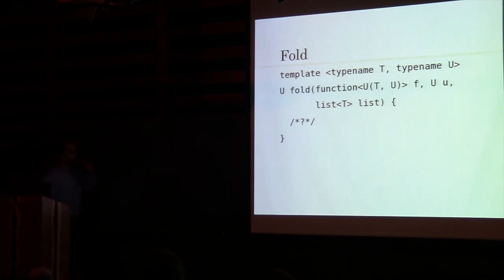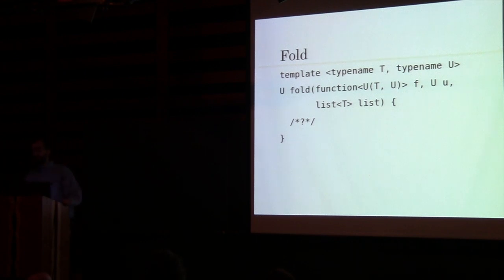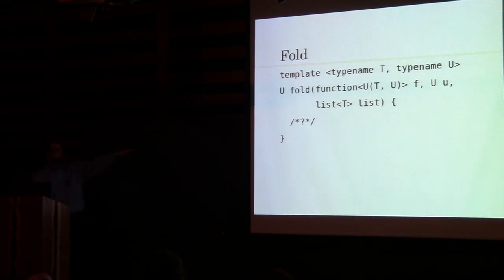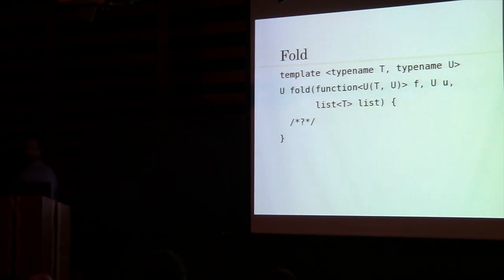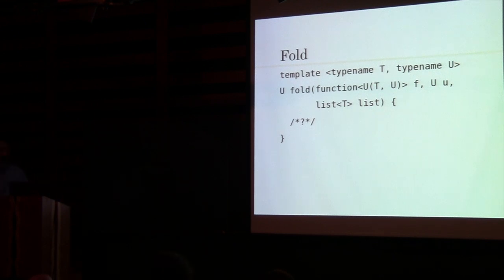Let's look at this higher-order function called fold. Based on this signature, we're going to try to come up with an interesting implementation. We see that we need to return a U. What we have available is a function which takes in a T and a U and returns a U, a plain old U value, and a list of T's. What's one way that we could return a U in this fold function? We could just return U, but that wouldn't be very interesting — we would just be ignoring the other arguments.